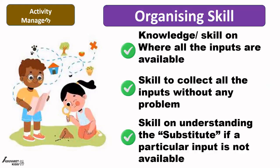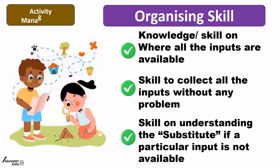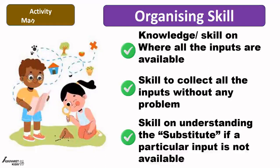The third sub-skill under organizing skill is the skill of understanding the substitute of a particular ingredient if that is not available. Life is just like that — whatever we try to get, we may not get it. The same happens while we plan for an activity. So the substitution skill — the skill of substituting one thing for another to get a particular thing done without simply waiting and wasting time — is another skill that can be very nicely developed while doing activities with our children.